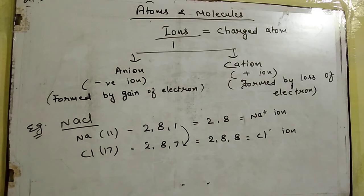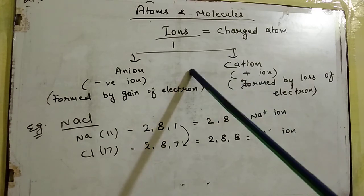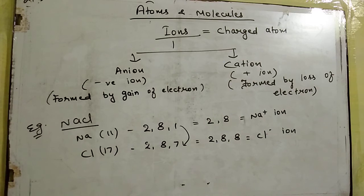To understood ki ions form kaise hote hain, ki jab koi bhi atom charge gain karta hai, electron lekar ya electron dekar, that is known as ion, aur yadi donate kar raha hai to positive charge, aur gain kar raha hai to negative charge, that is the simple concept of formation of ions.